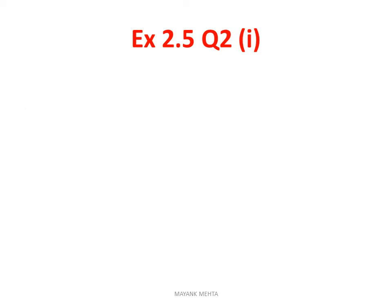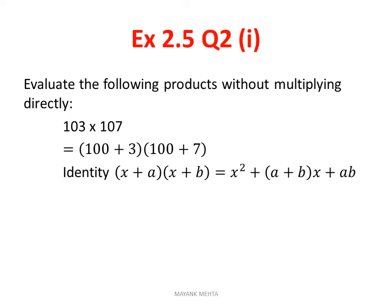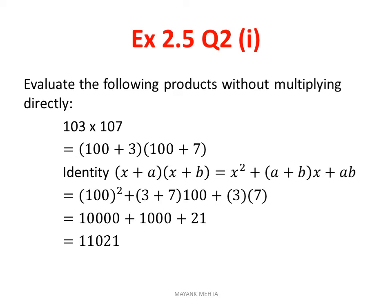Next, question 2 of 2.5. Question 2 asks evaluate the following products without multiplying directly. You have to evaluate without direct multiplication. I have taken the first sum first, 103 into 107. Look, I can write 103 as 100 plus 3 and 107 I will write as 100 plus 7. Here we will use the identity (x+a)(x+b). That is x² plus (a+b)x plus ab. You will put the values and you will get the answer. In this multiplication you have to be very careful. Show all the steps properly. There are chances of making mistakes if you don't apply the identity correctly.